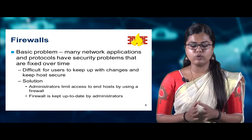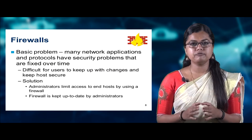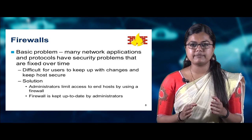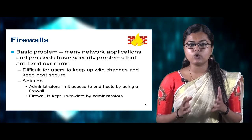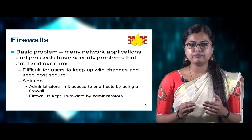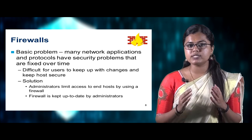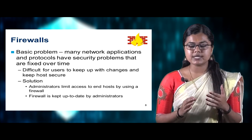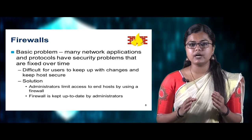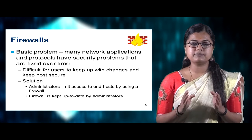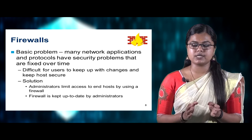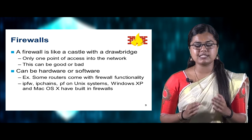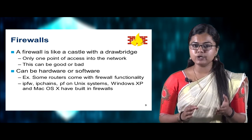Going for firewalls — the firewall is the first countermeasure for these attacks. The basic problem is that many network applications and protocols have security problems that are fixed over time, making it very difficult for users to keep up with changes and keep hosts secure. One main solution is that administrators will limit access to end hosts by using a firewall kept up to date. A firewall is like a castle with a drawbridge — there is only one point of access to the network — which can be either good or bad.